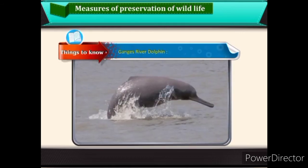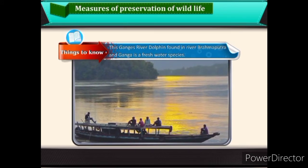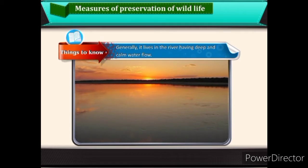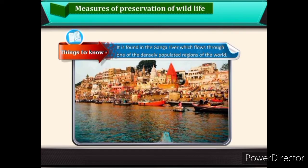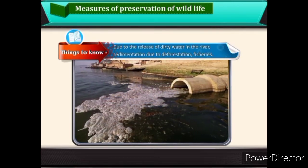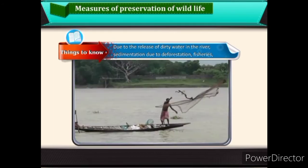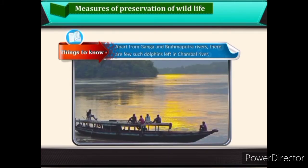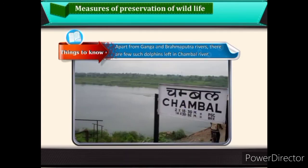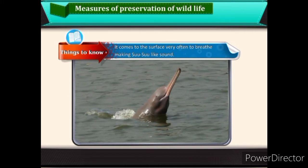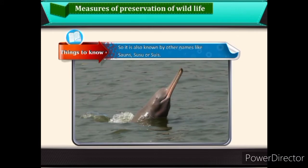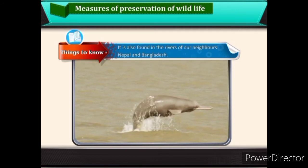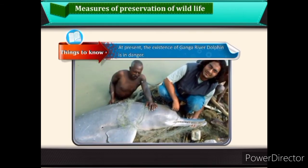Things to know — Ganga River Dolphin: The Ganga River Dolphin, found in the Brahmaputra and Ganga rivers, is a freshwater species. It generally lives in rivers with deep and calm water flow, in one of the densely populated regions of the world. Dangers to its existence include release of dirty water, sedimentation due to deforestation, fisheries, river navigation, and industrial waste. Apart from Ganga and Brahmaputra, a few such dolphins remain in Chambal River. It comes to the surface frequently to breathe, making a su-su-like sound, so it is also known as su-su or sues. It is also found in the rivers of Nepal and Bangladesh, but its existence is currently in danger.